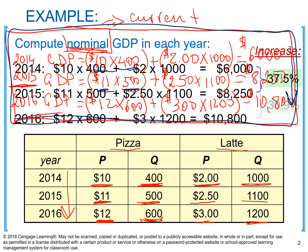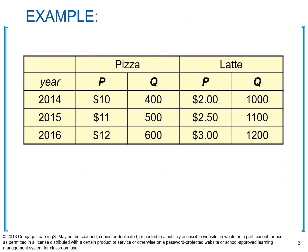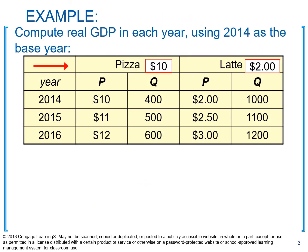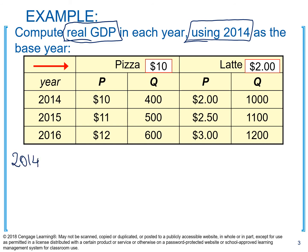Now we're going to look at the same table and calculate real GDP. The base year is 2014, which serves as our benchmark. For the base year, it's always easy to calculate real GDP — we take prices of the base year, which are the same as current prices in that year.